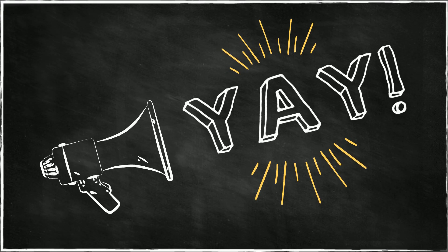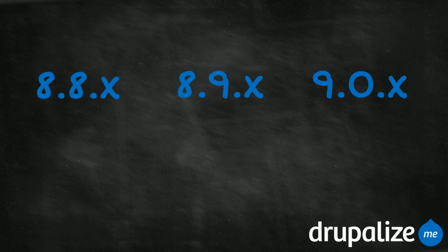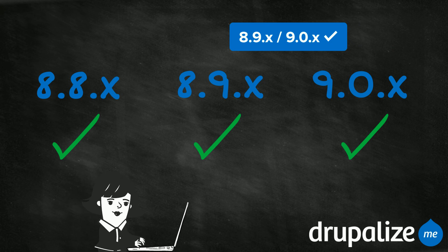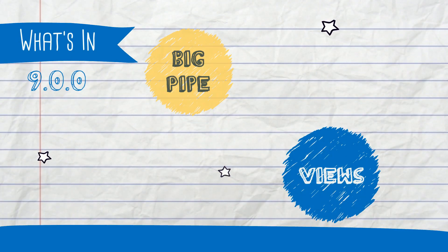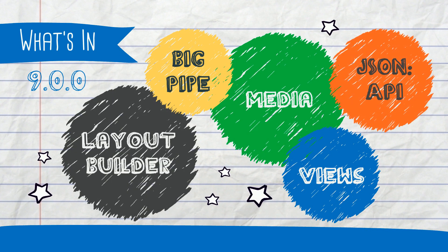So that means that if you're up to date with the latest minor release of Drupal 8, you're close to being ready for Drupal 9. It also means that Drupalize.me's Drupal 8 tutorials, which we've been keeping up to date with API changes, apply to Drupal 9 sites. Drupal 9 contains all the awesome features of Drupal 8. And at Drupalize.me, we're always working on tutorials for Drupal's newest features.